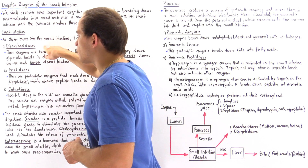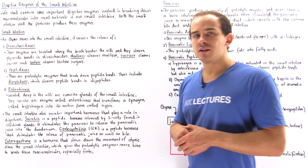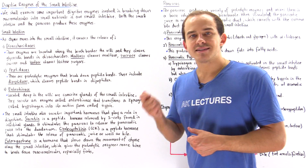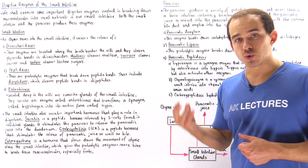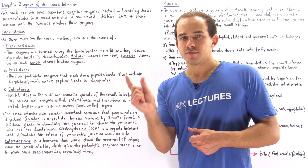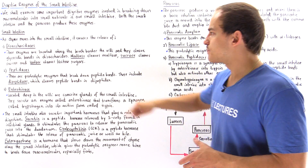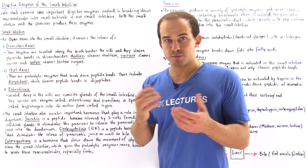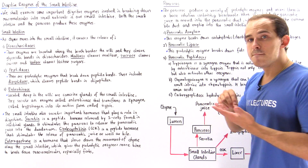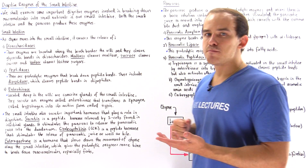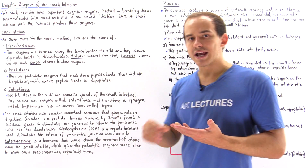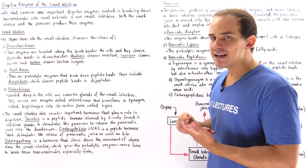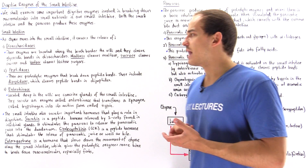Disaccharidases are those proteolytic digestive enzymes that break down our disaccharides — sugars that consist of two individual monomers. Three important types of disaccharidases you should be familiar with are maltase, which breaks down maltose; sucrase, which breaks down sucrose; and lactase, which breaks down lactose.